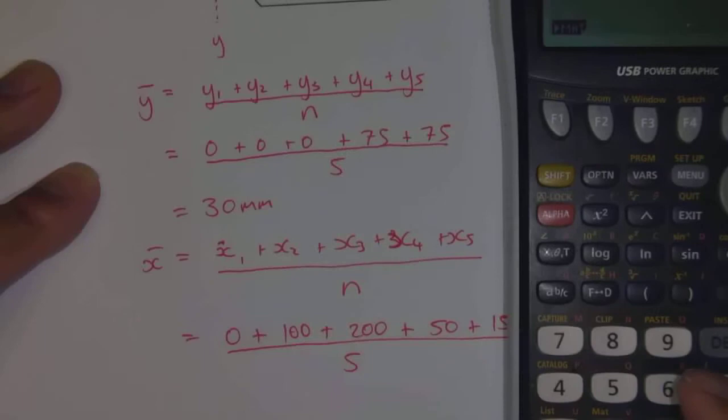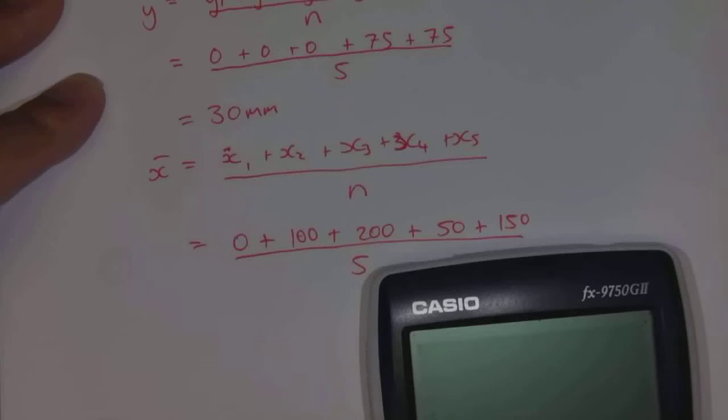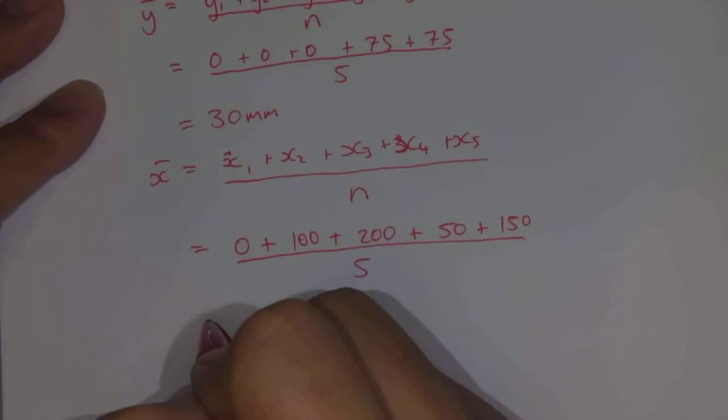All right, so 0 plus 100 plus 200 plus 50 plus 150, all divided by 5, and I get 100.